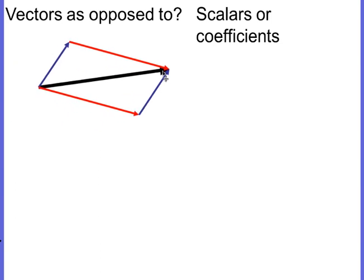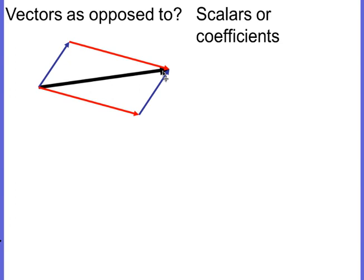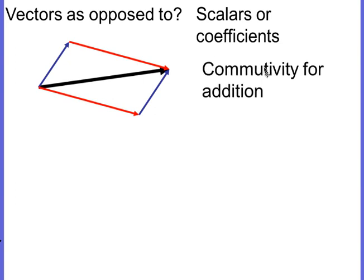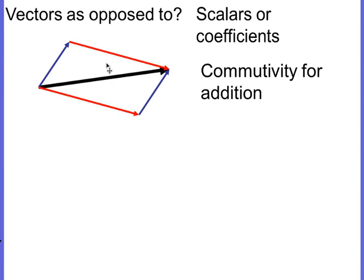The book gives you this picture, which is a familiar head-to-tail addition of vectors to get the resultant vector. But what property of vector addition is being illustrated by this picture? This is showing commutativity — that it doesn't matter whether you add the blue vector first and the red second, or the red vector first and the blue second, you get the same result. Changing the order, commuting, does not affect the vector addition.